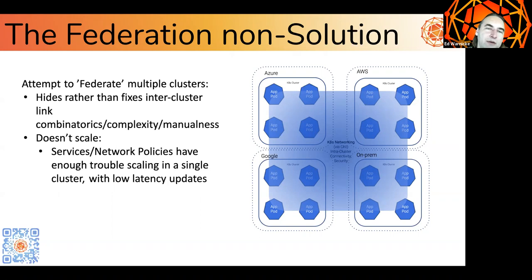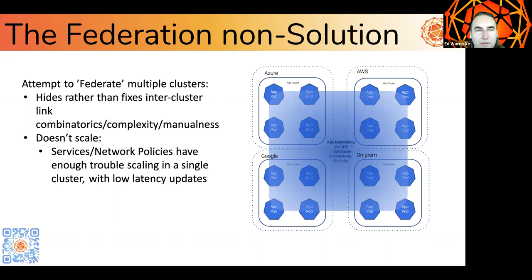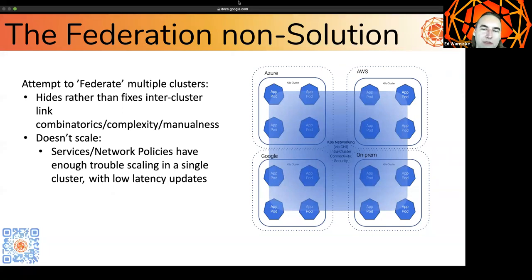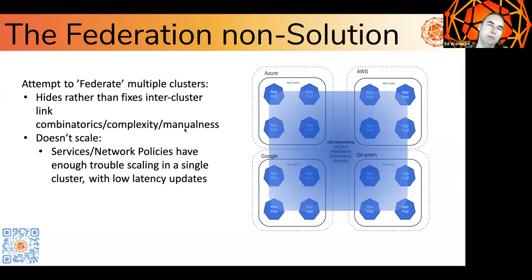People who have stepped forward said, let's do Federation. Federation is a good solution for certain problems, but it's not a terribly good solution for this one — it kind of hides rather than fixes the inter-cluster linkage problem. It also doesn't scale particularly well. As you scale up to large clusters, you start running into limitations propagating services and network policies. As you add more geographically isolated clusters, those combinatoric complexities get much, much worse.